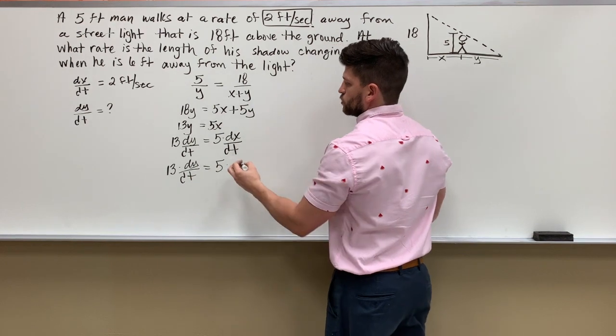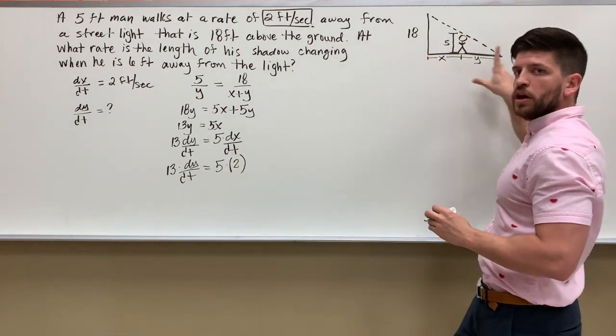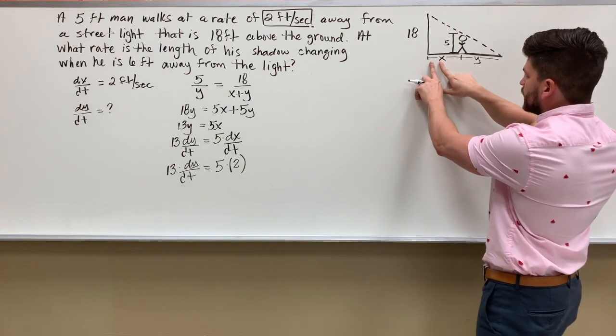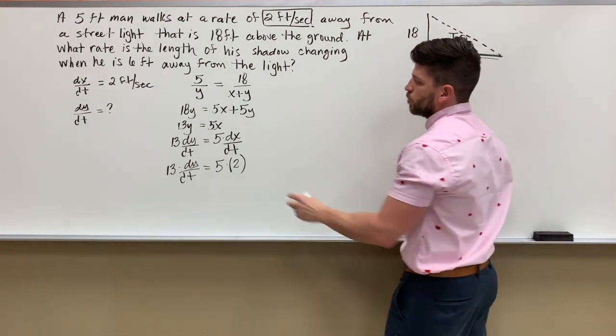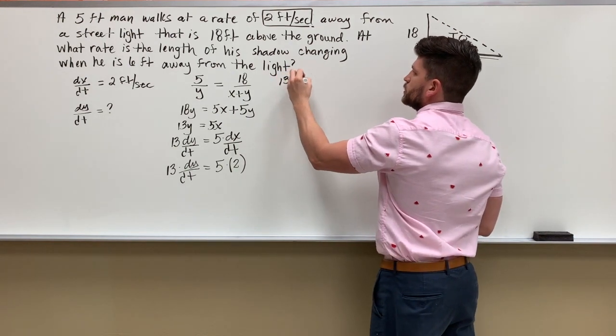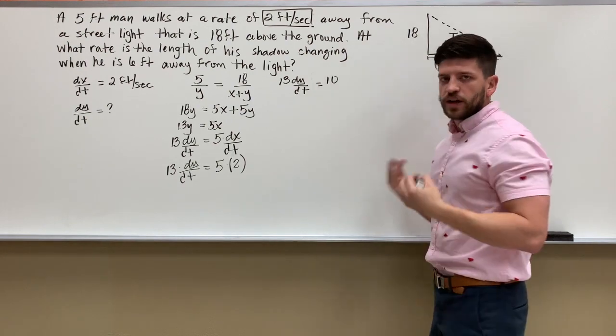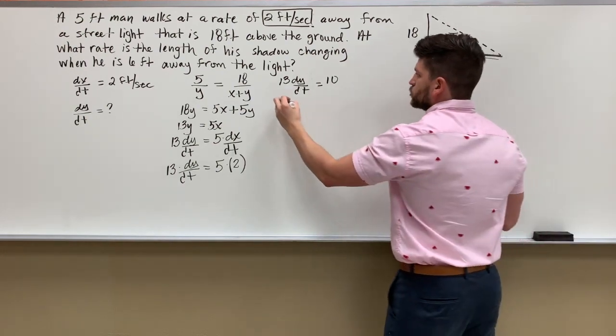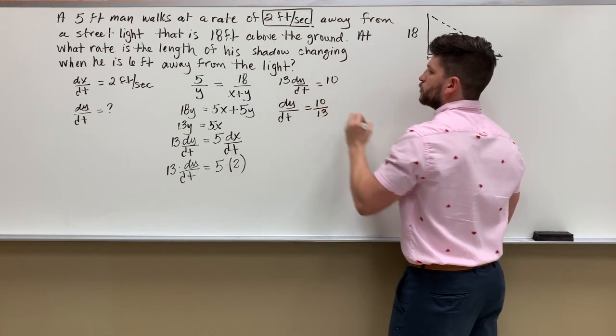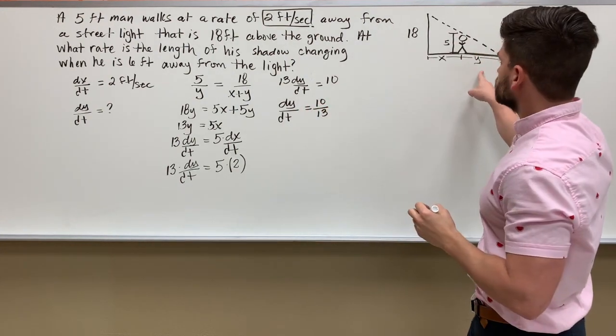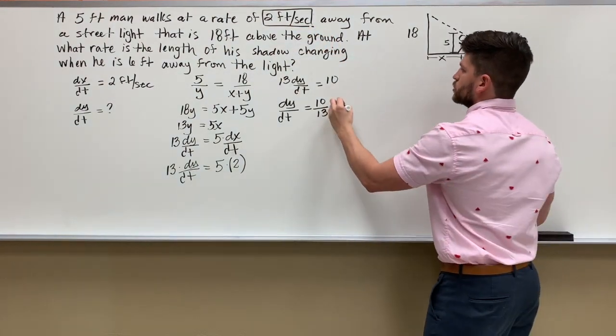So when I plug all of that in, dx/dt is 2, and again it's positive 2 because remember he's walking away from the streetlight, which means this side length is going to be increasing or growing, so that rate's positive. So what I have is 13 dy/dt equals 10, and then just divide both sides by 13. So dy/dt is just going to be 10 over 13, and the units on that are going to be just like my units on my dx/dt, so it's going to be feet per second.